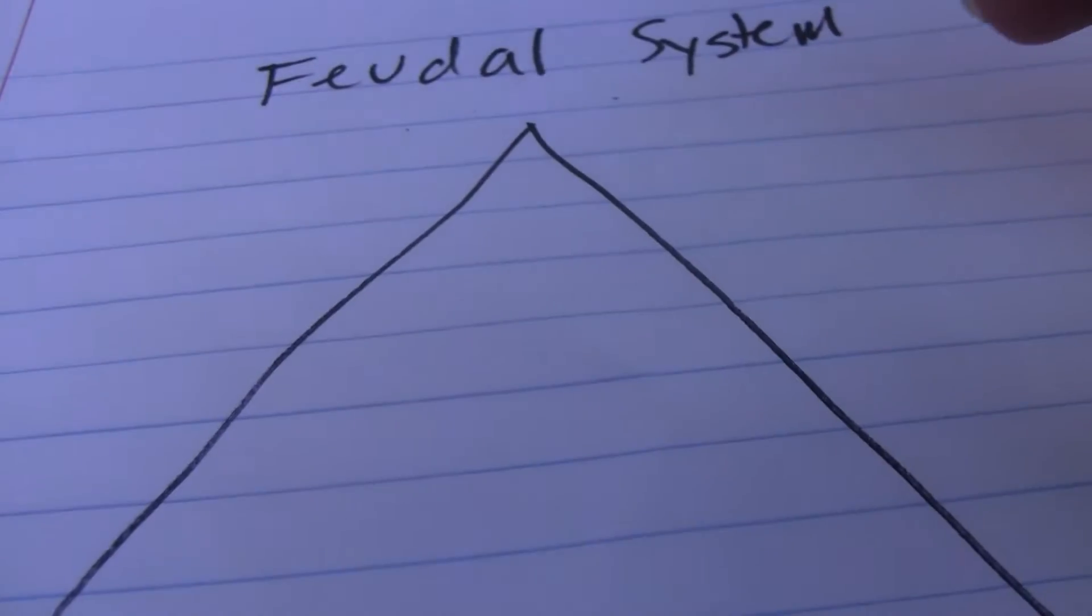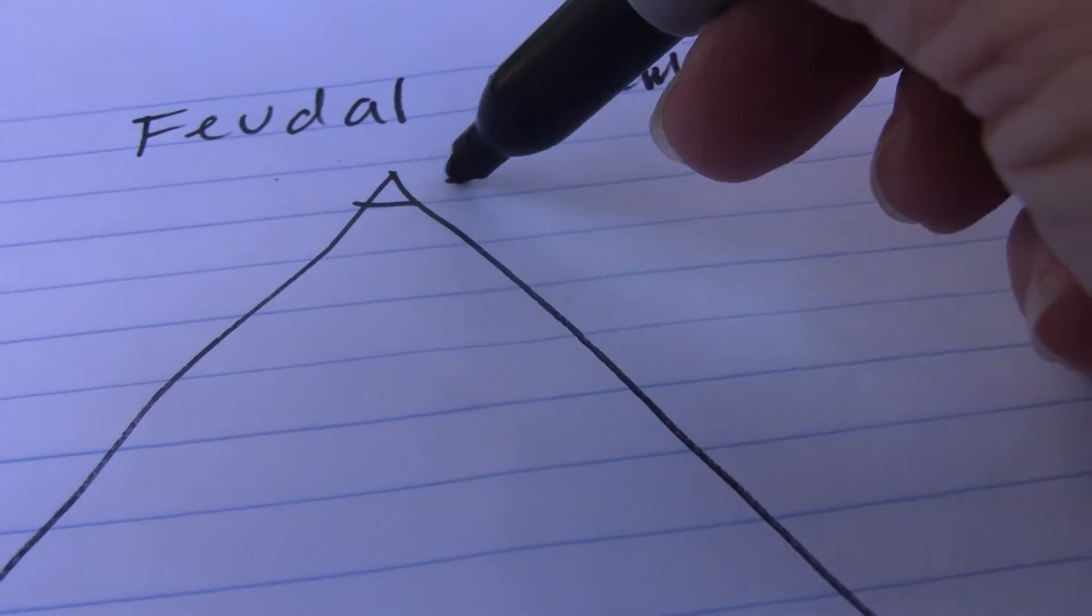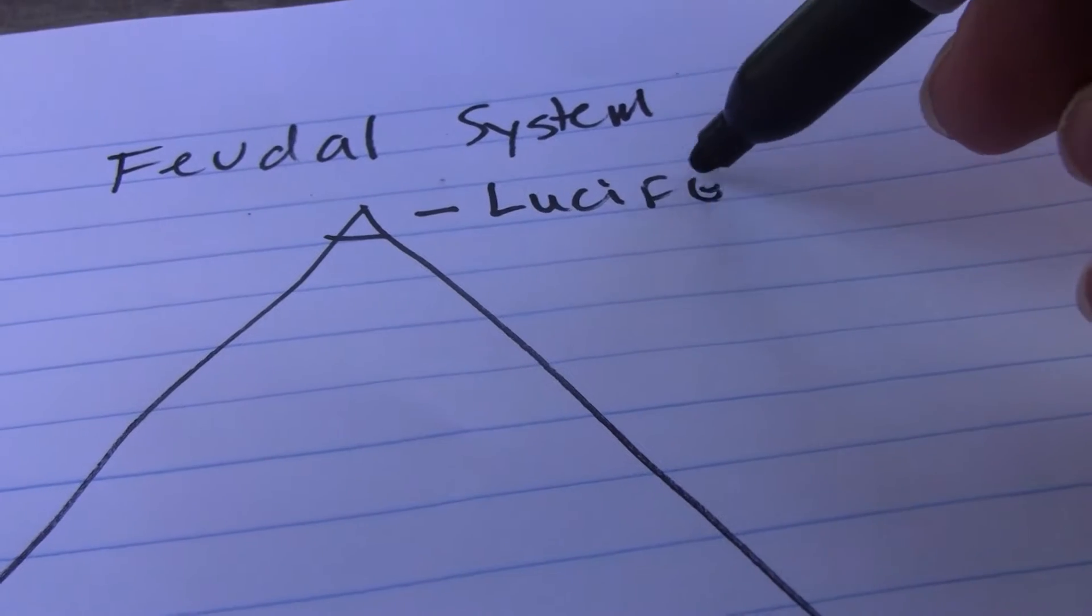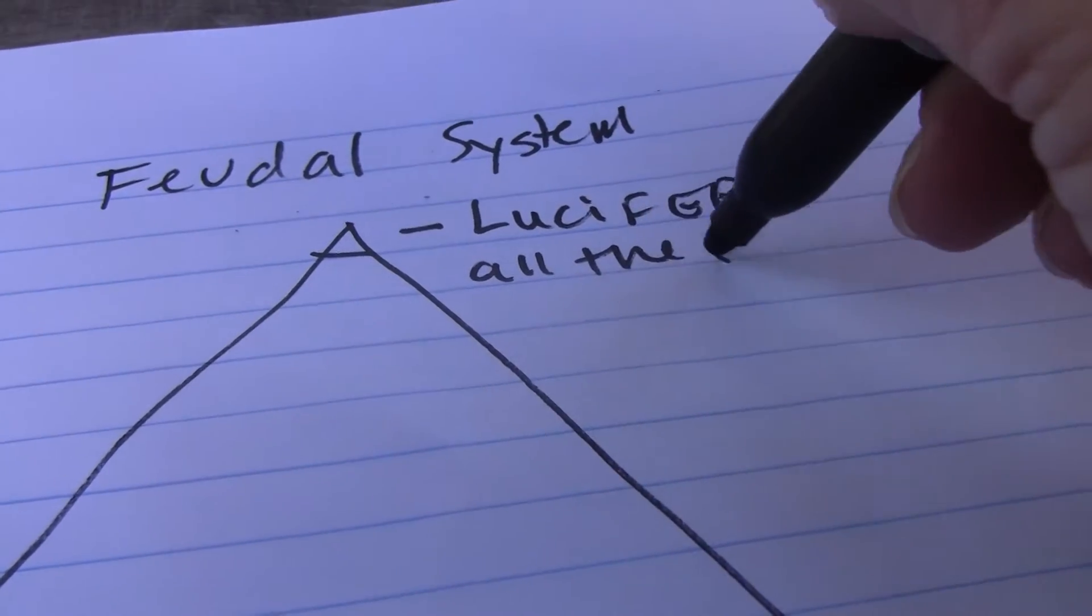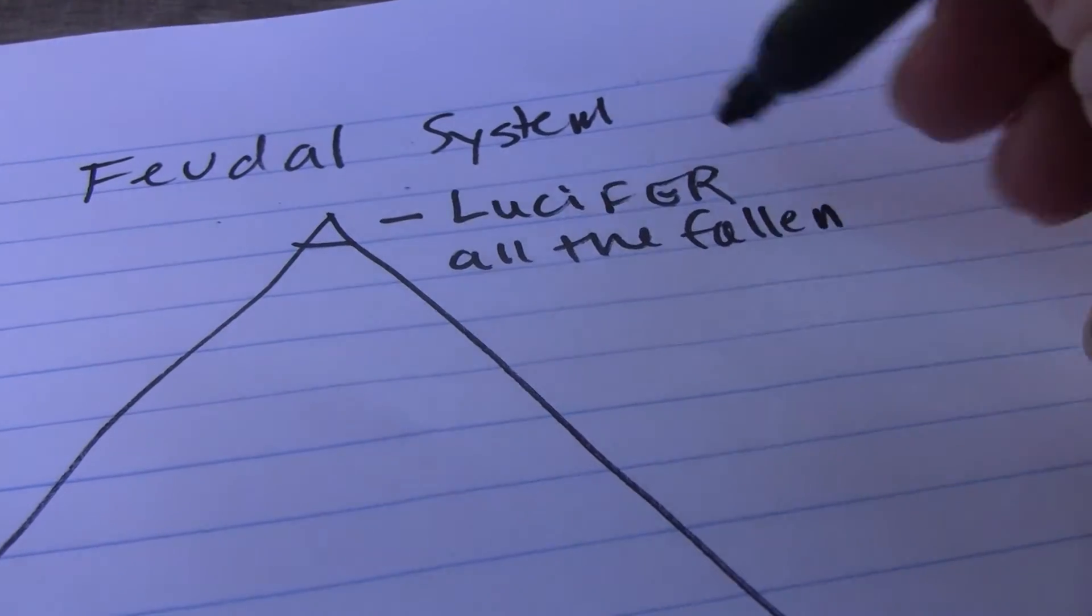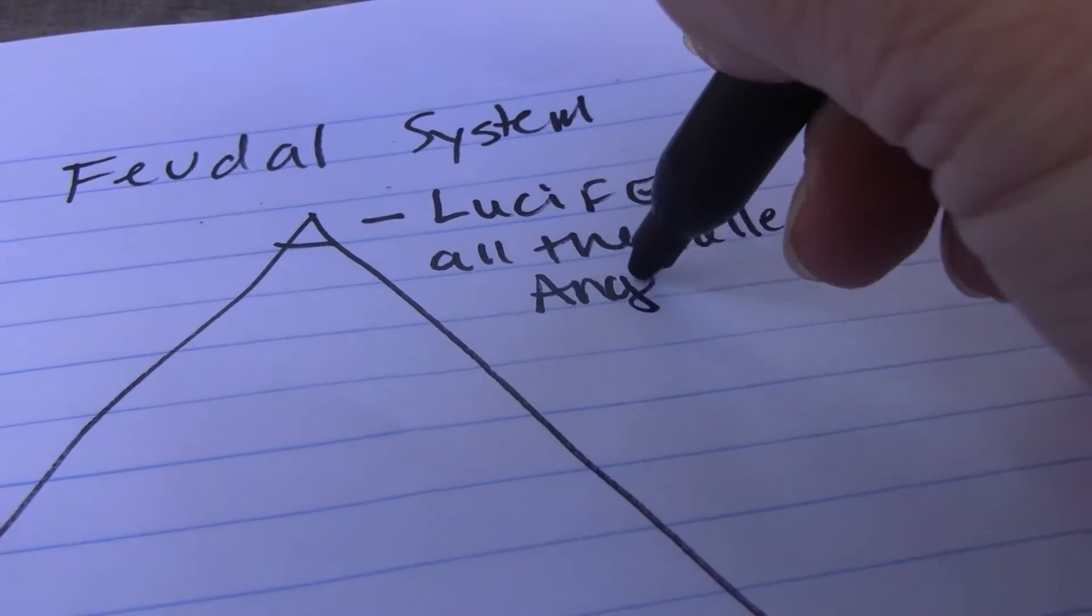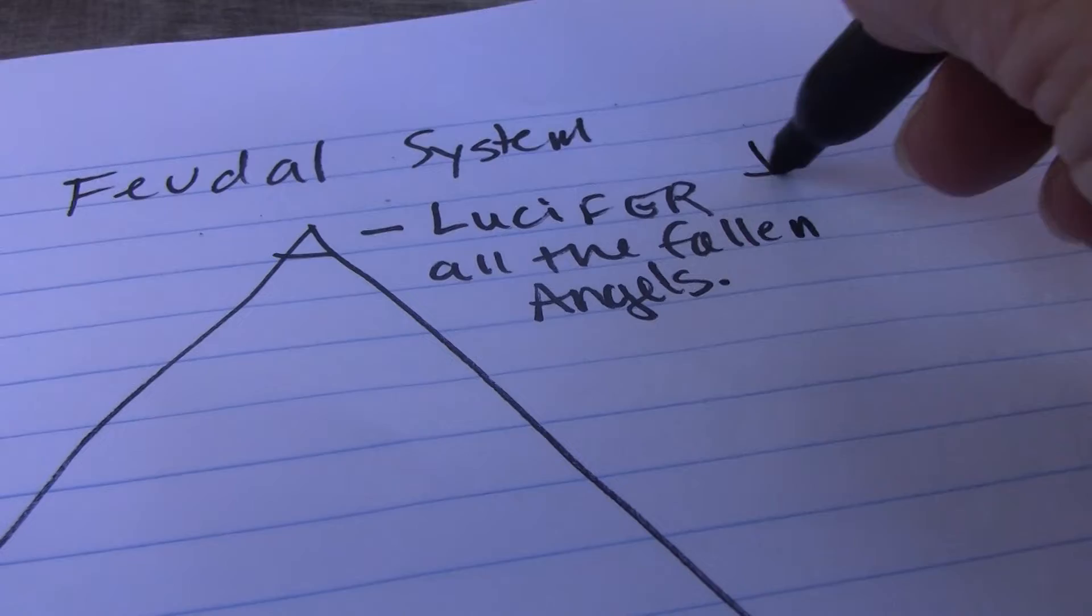This is how it's all designed by the fallen prince of the planet. At the very top you have Lucifer and all the fallen angels. That's a third of the angels.